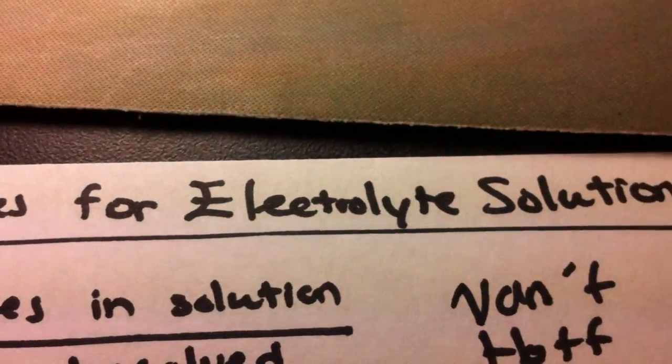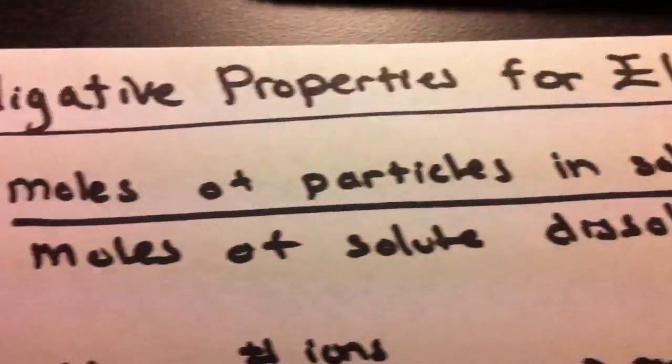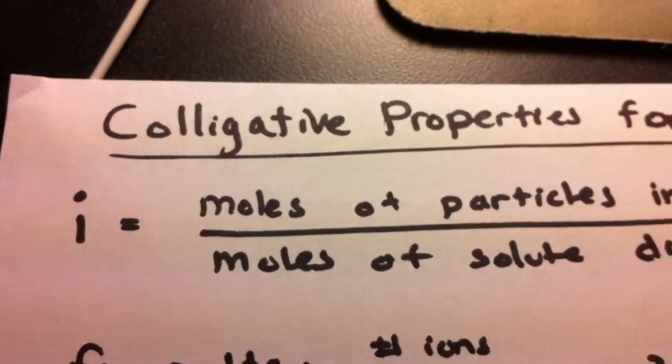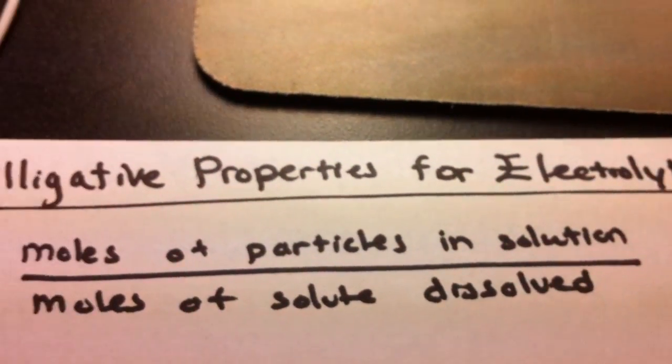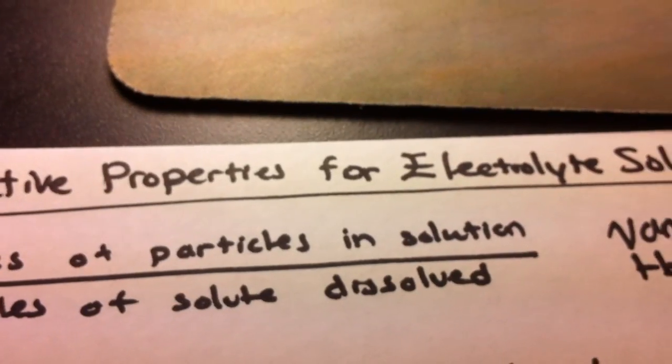The colligative properties for electrolyte solutions is based on the Van't Hoff factor, i. I equals the moles of particles in solution over the moles of solute dissolved.